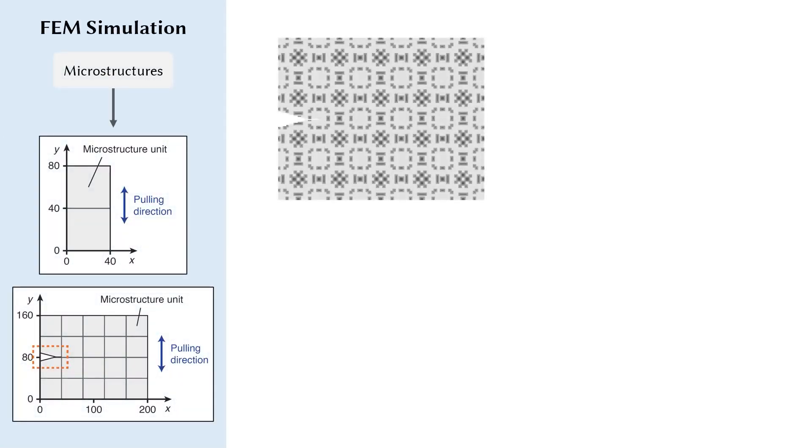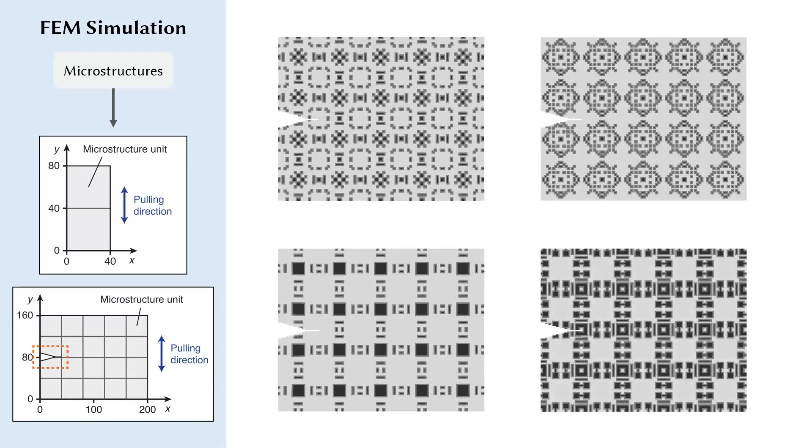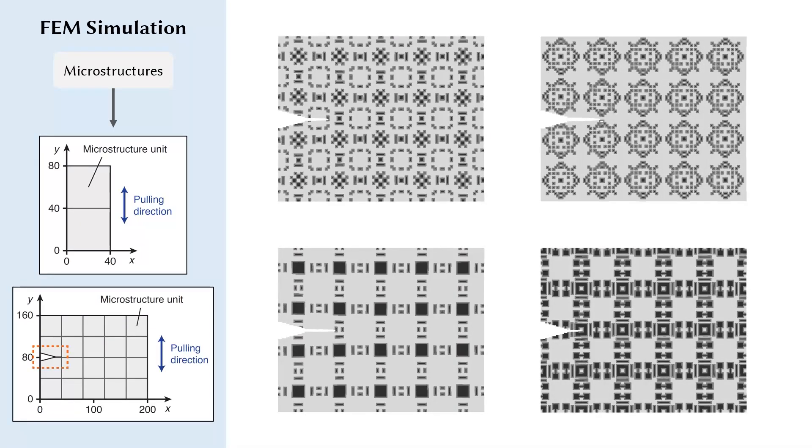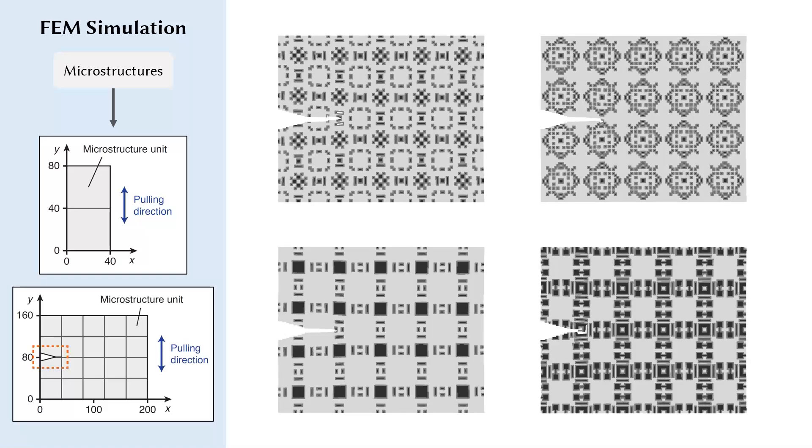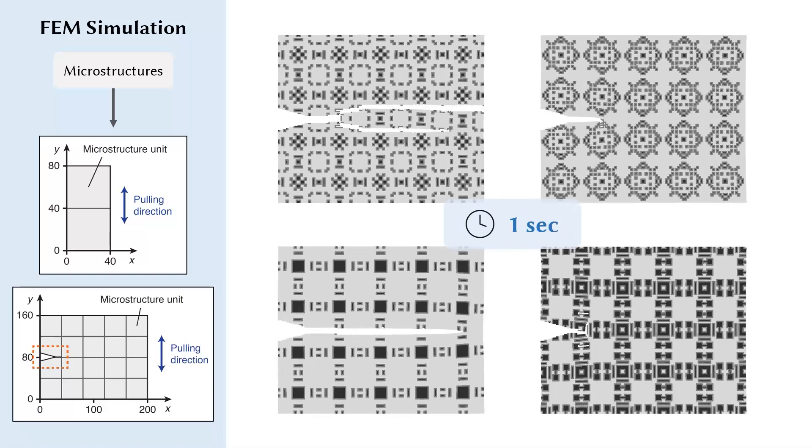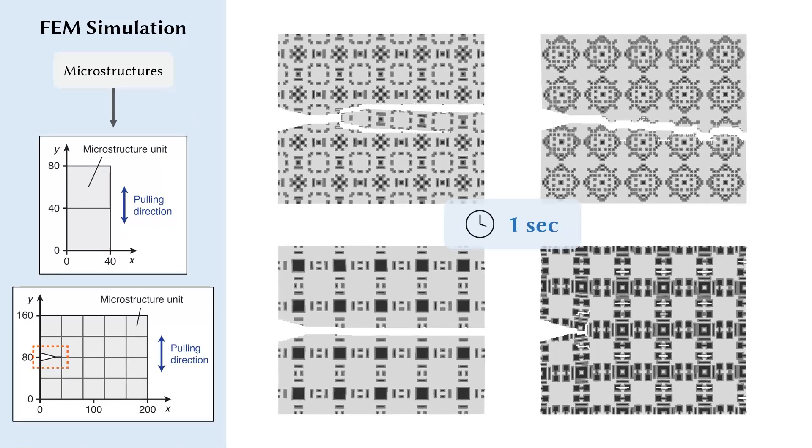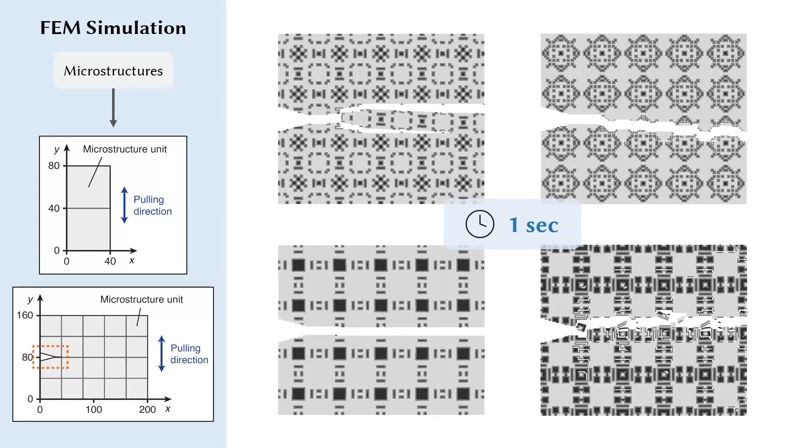To reduce the amount of testing, we run FEM simulation as a faster but less accurate alternative. The simulator virtually tiles a microstructure pattern within the FEM grid and measures simulated stress strain responses. Our efficient implementation enables a throughput of about 1 second per sample, which is orders of magnitude faster than mechanical testing.